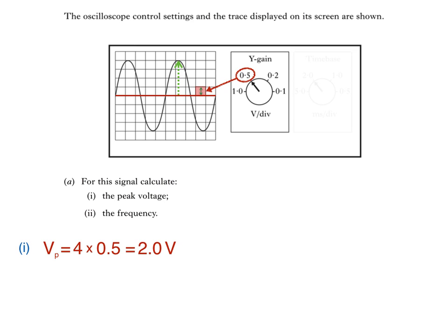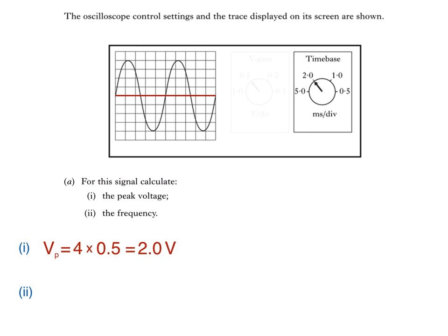You'll see that I've faded out the time-based setting, because we don't need it to calculate the peak voltage, although we do need it to answer part two to find the frequency of our trace. First of all we need to find the period of the trace, the time taken to produce one wave. This time we find the number of horizontal divisions, from one peak to the next.